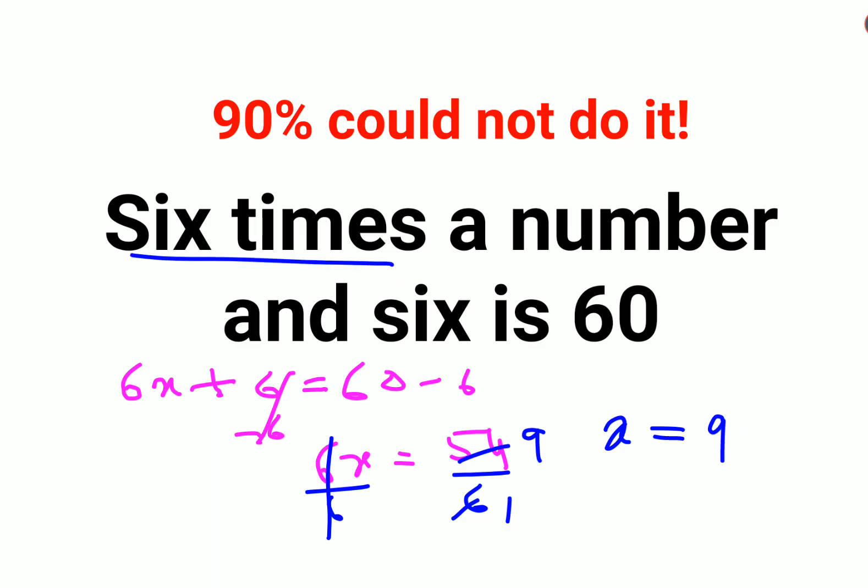Let's verify this. 6 times a number, the number is 9. So 6 into 9 and 6, that's 6 times 9 plus 6. So that gets you 54 plus 6, which gets you 60, and that is correct.